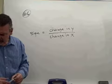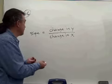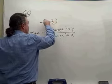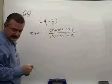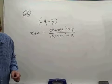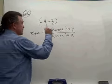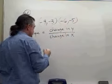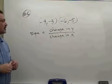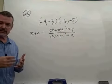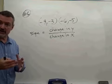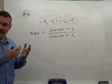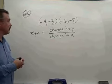We have the two points negative 4, negative 3 and negative 6, negative 5. Let's look at these two points and see how the Y changed and how the X changed, form that fraction, and that's our slope.